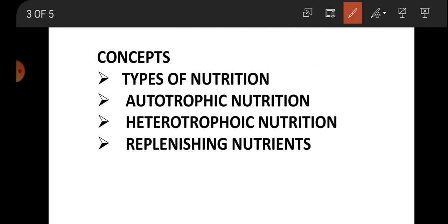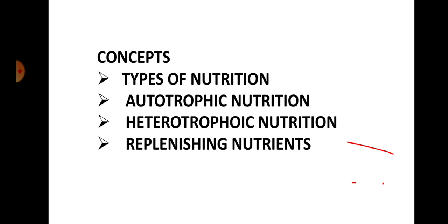So what are nutrients? Components of food — carbohydrate, protein, fat, vitamins and minerals — that are necessary for our body are called nutrients. Then nutrition: what is nutrition? Nutrition is the mode of taking food by an organism and its utilization by the body.